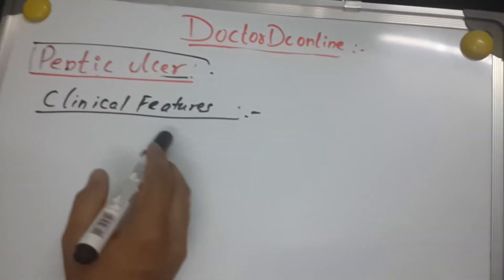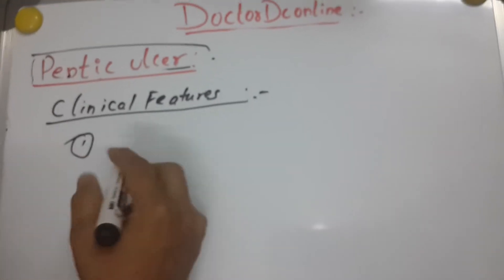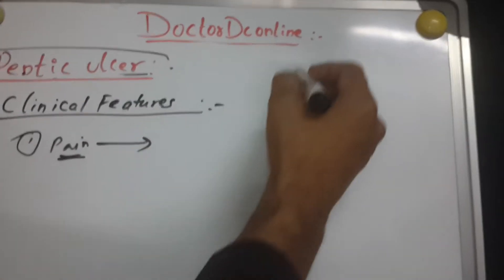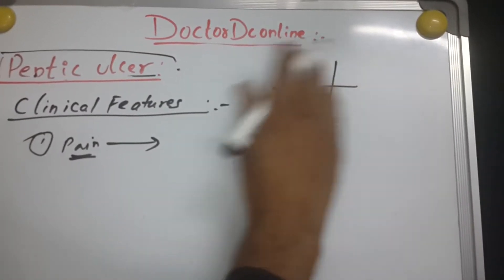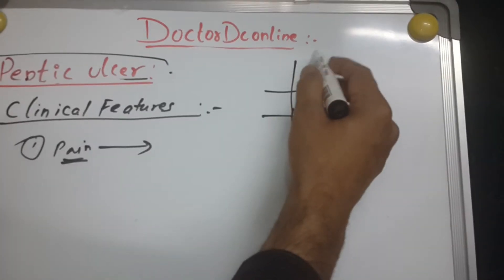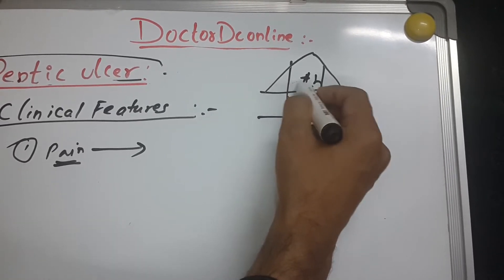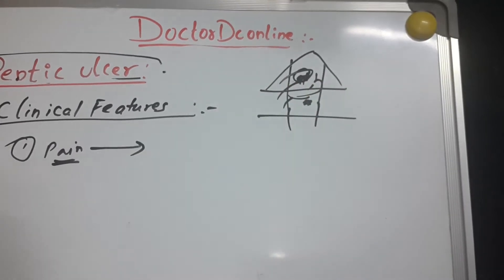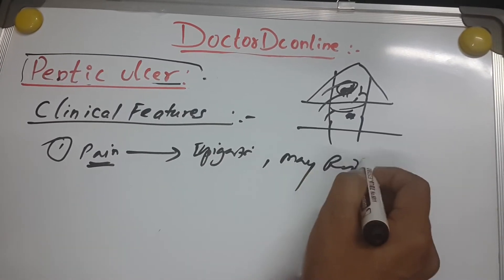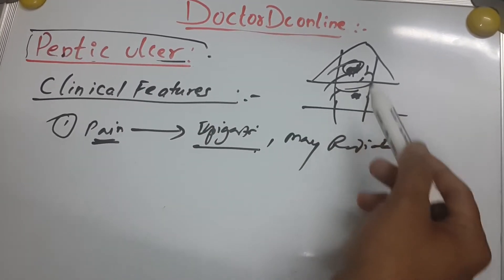Now, peptic ulcers — we are talking about clinical features. The first is pain. The main pain is epigastric. This is the umbilicus, and I divide the quadrant — this is the epigastric region, because the stomach lies here. So the pain lies in the epigastric region. This epigastric pain may radiate.